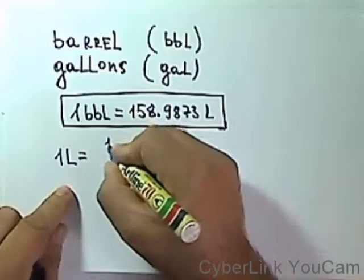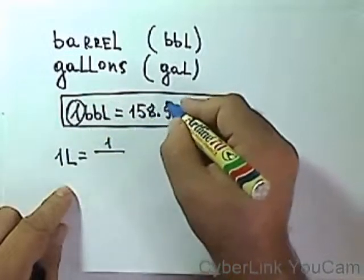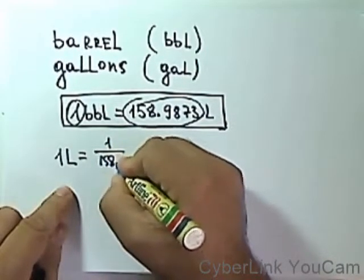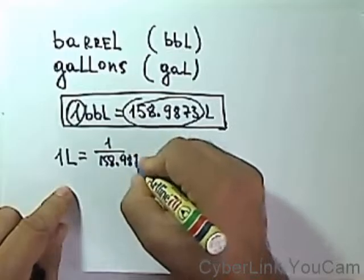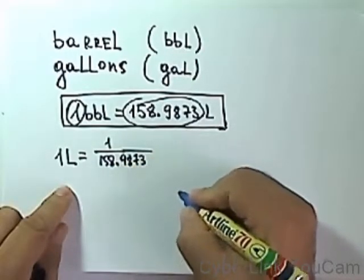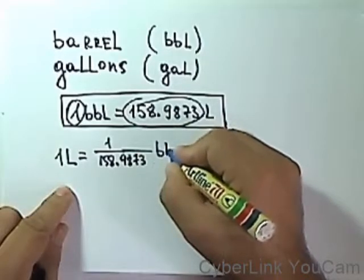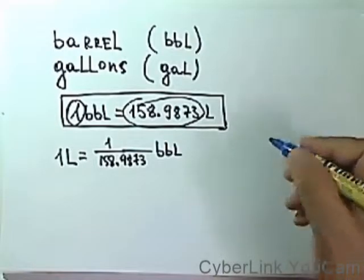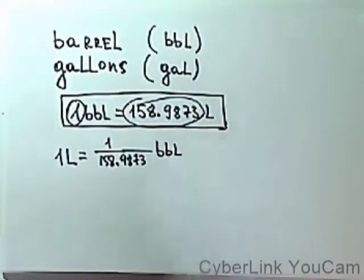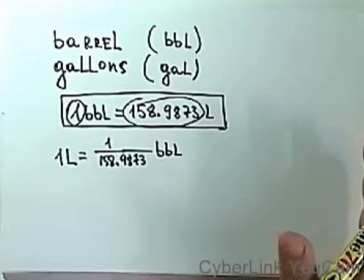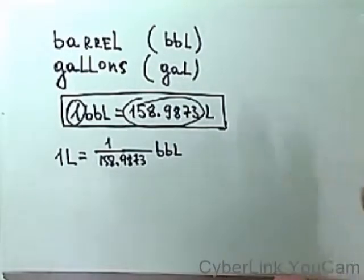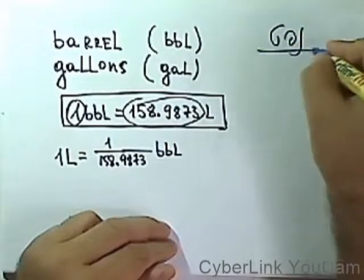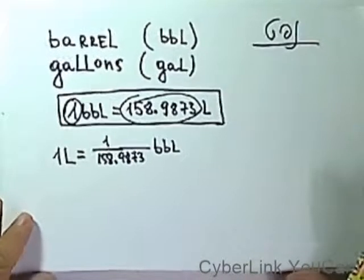We need to divide by 158.9873, but if I divided this number, I also need to divide that number. That means, what do I get? 1 liter equals 1 divided by 158.9873 of a barrel of oil. There are barrels with beer, for example, but we're talking today about oil.